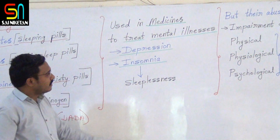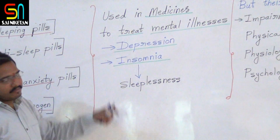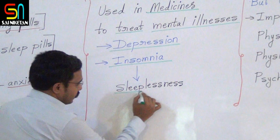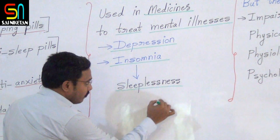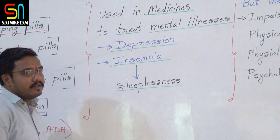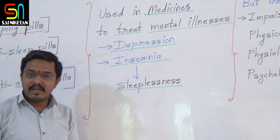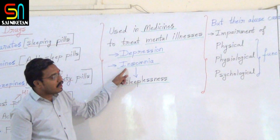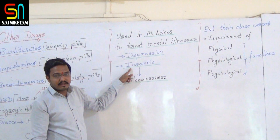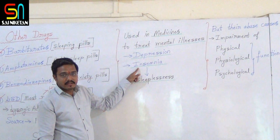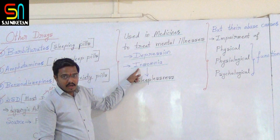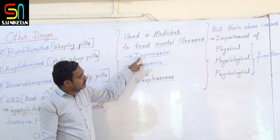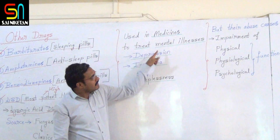Insomnia and depression are mental illnesses. Some people may suffer from high anxiety and take benzodiazepines. When people take these drugs in normal life beyond medical need, it is called abuse.